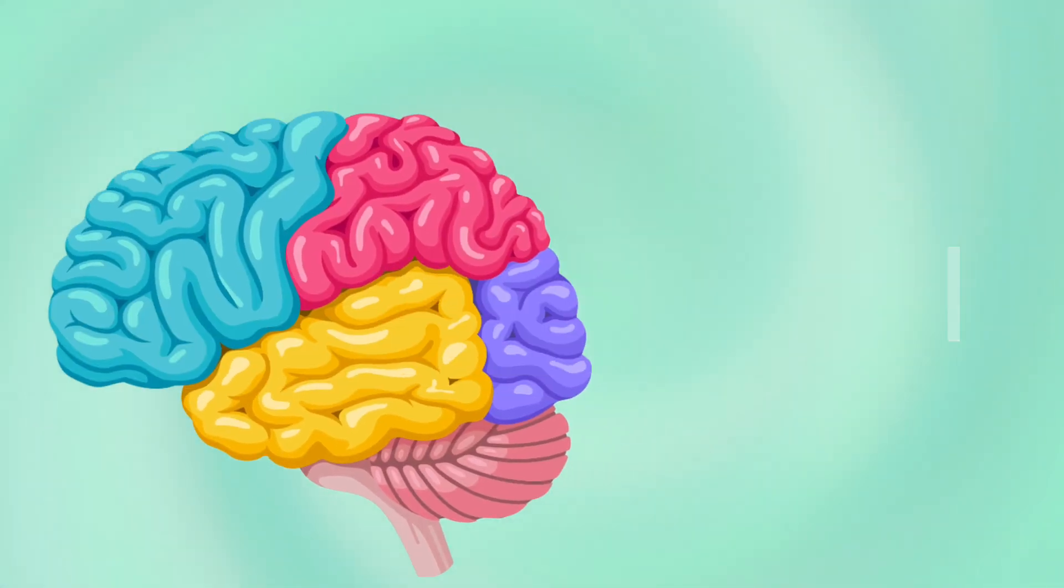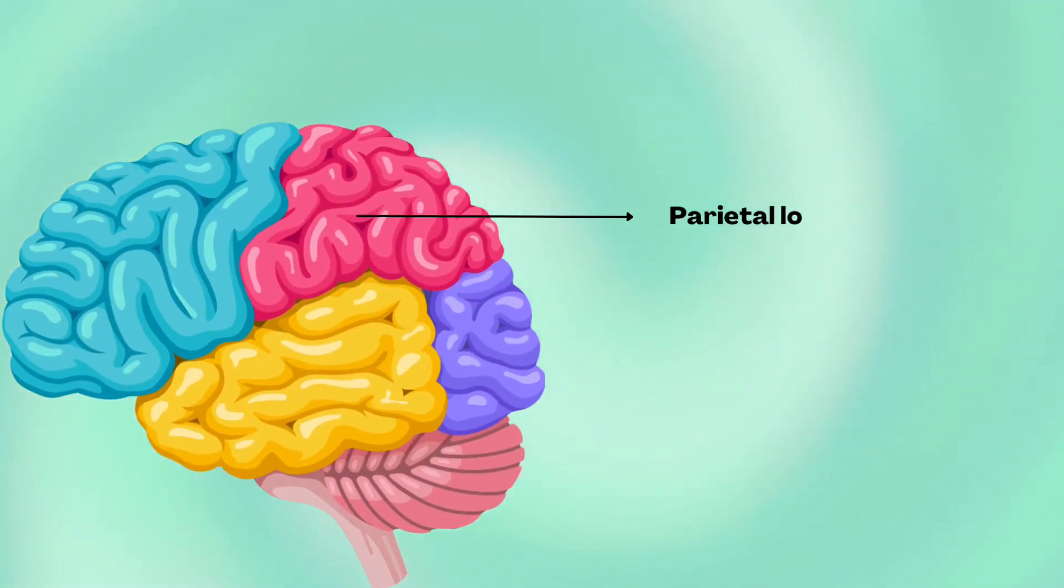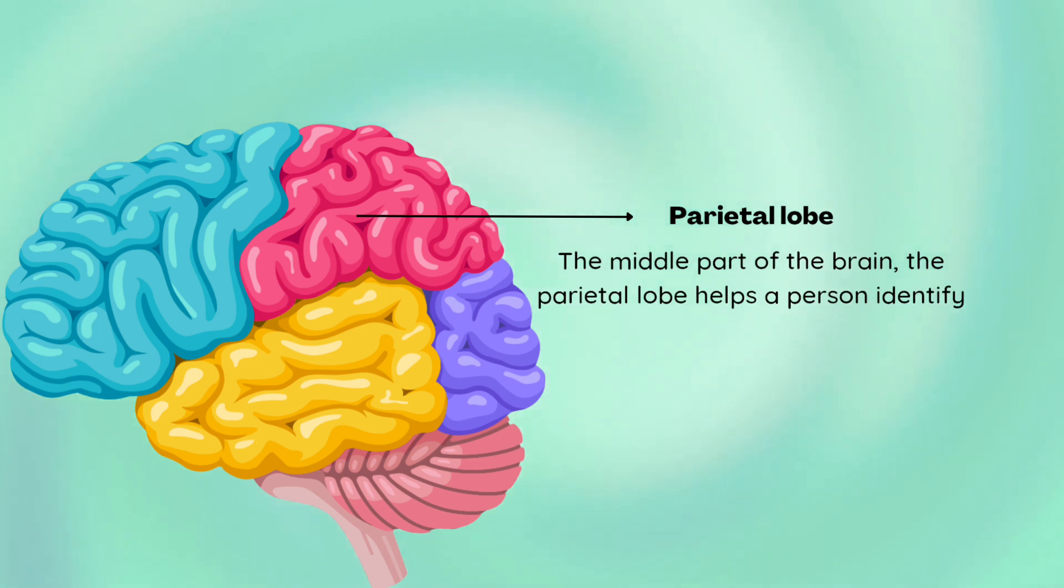The brain. Parietal lobe - the middle part of the brain. The parietal lobe helps a person identify objects.